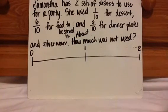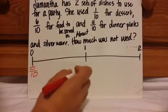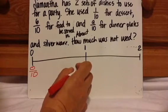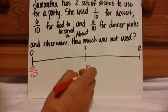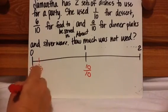Let's go over it. 1/10 for dessert. If I were to think of this as 0/10 and this as 10/10, then 1/10 would be right here. So it's like she barely used anything.